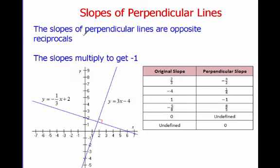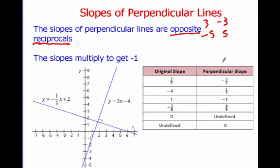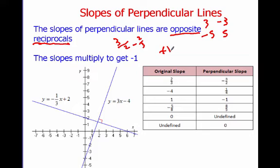Now, perpendicular lines are different. The slopes of perpendicular lines are opposite reciprocals. Opposite simply means positive or negative — if I give you 3, its opposite is negative 3; if I give you negative 5, its opposite is 5. And reciprocal means you flip the fraction — for example, the reciprocal of 3 halves is 2 thirds. The opposite reciprocal of 3 halves would be negative 2 thirds. Opposite reciprocals means you both flip it and change the sign.